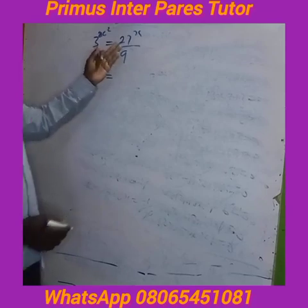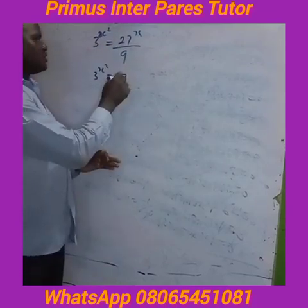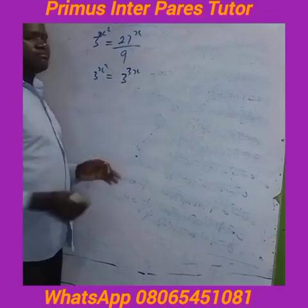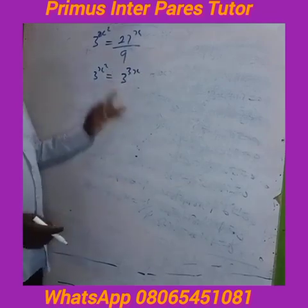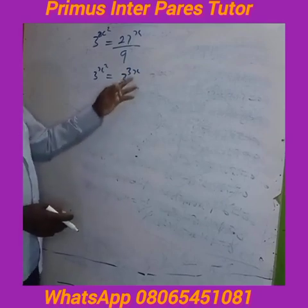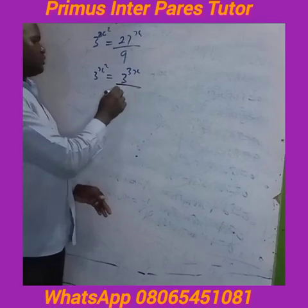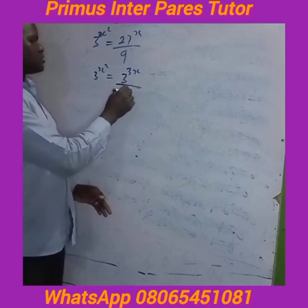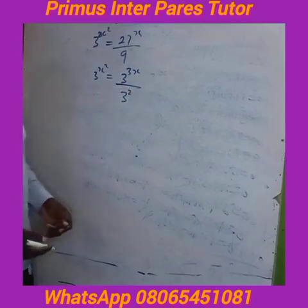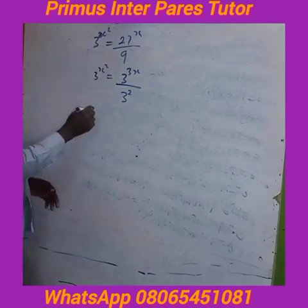So here you have 3 raised to the power 3x. So 3 raised to the power 3 is 27, that's 3 times 3 times 3. You will have 3 raised to the power 2, so 3 raised to the power 2 is 9 — that's 3 squared.